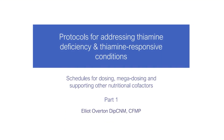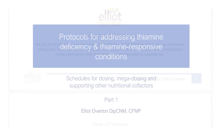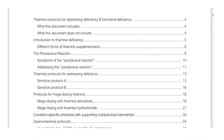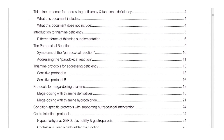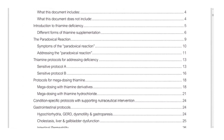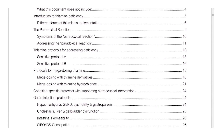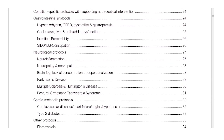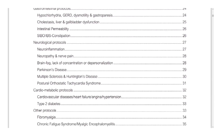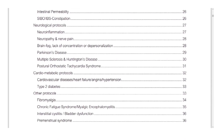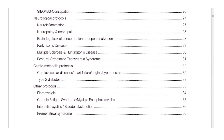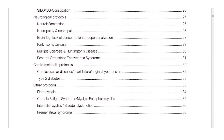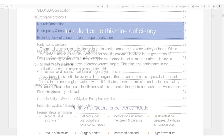The first section looks at how to address thiamine deficiency with supplements and how to dose for thiamine responsive conditions. It includes information for sensitive people, for non-sensitive people, how to megadose with different forms, and how to dose with nutritional cofactors for different thiamine responsive conditions as well.